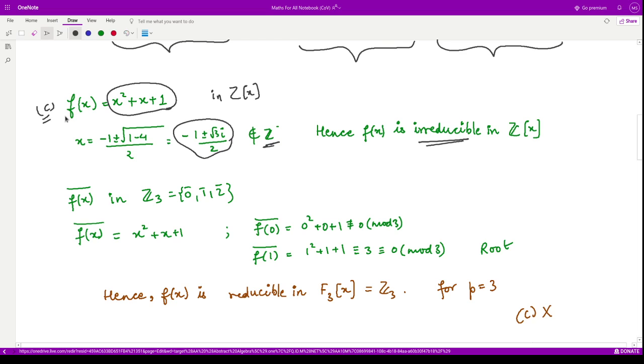Moreover, we need to check it for some F_p where it should be reducible. So we need to find that p for which the given polynomial in this ring should be reducible.